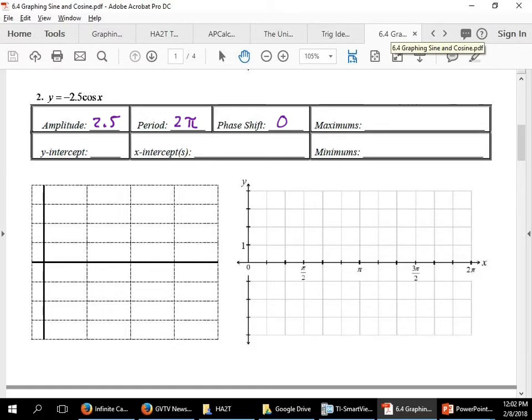So we know our pattern. Our pattern for cosine goes max, midline, min, midline, max, like so. The only thing that would change that is if there's a negative a out in front. There's our negative a. So because there's a negative a, we're going to flip this.